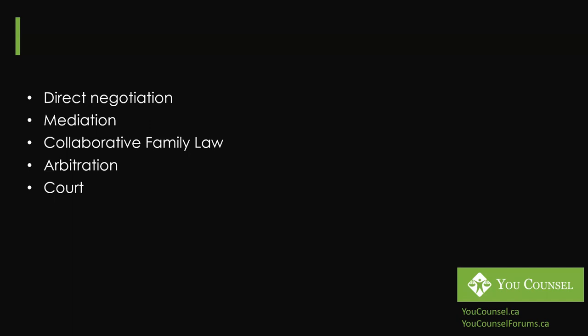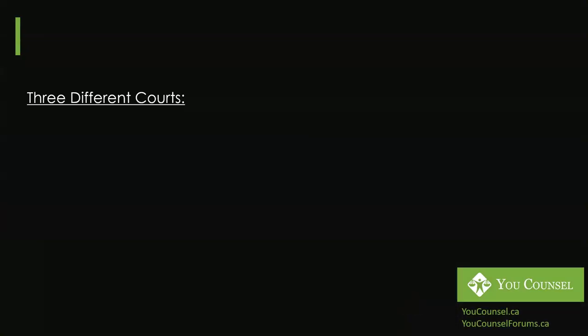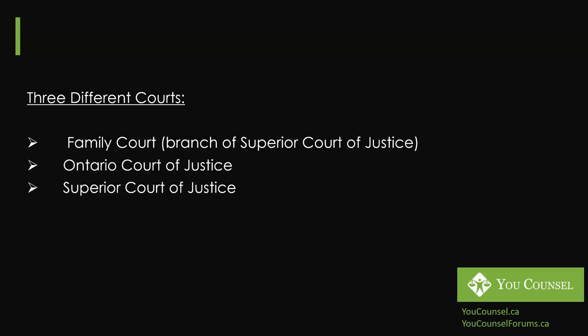If none of those four avenues work for you, then you can always go to court and have your family law dispute resolved in court. What is the court structure for family law in Ontario? There are three different kinds of courts in Ontario that deal with family law matters: Number one is Family Court, which is a branch of the Superior Court of Justice. Number two is Ontario Court of Justice. Number three is Superior Court of Justice.